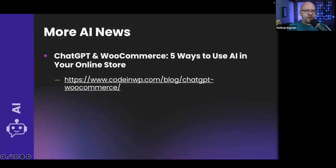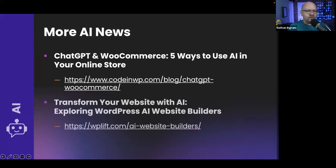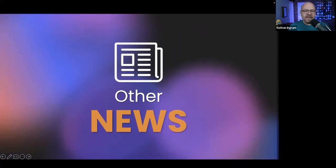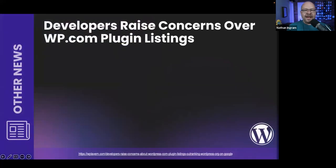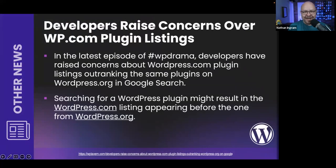A couple more AI-related reads: a great article on CodingWP titled 'Five Ways to Use AI in Your WooCommerce Store,' and an article on WPLift on how AI is going to transform WordPress website builders.